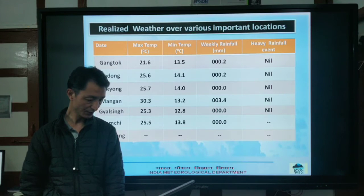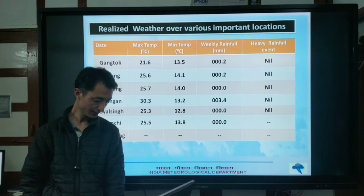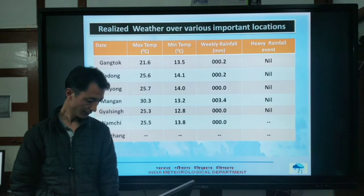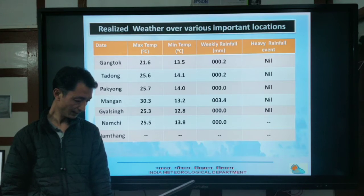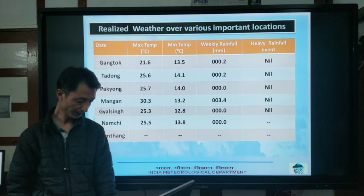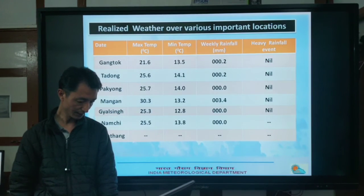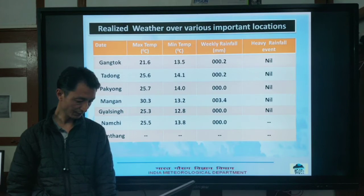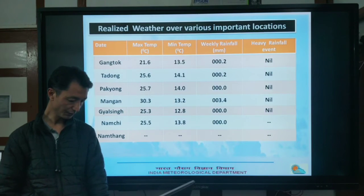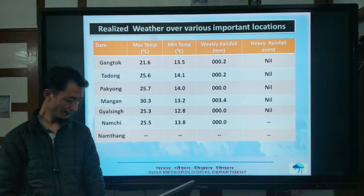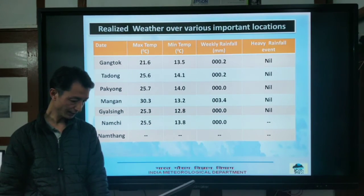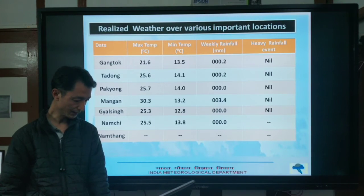Regarding realized weather over various important locations: Mangan recorded a maximum temperature of 30.3 degrees centigrade, while the minimum was recorded at Gangtok at 12.8 degrees centigrade. Mangan also had the maximum rainfall of 3.4 millimeters, while Tadong and Gangtok each recorded 0.2 millimeters.